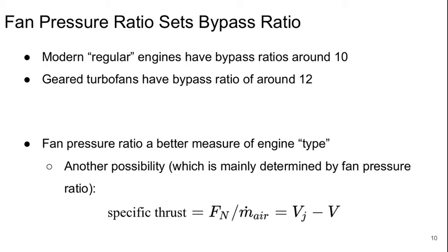So most modern regular engines have bypass ratios of around 10-ish. The geared turbofan engines have higher bypass ratios of up to 12. This fan pressure ratio is really a better measure of what type of engine it is than the exact value of the bypass ratio. Or another way to think about it in terms of classifying what kind of engine it is is to think about it in terms of specific thrust. Specific thrust is just the net thrust over the mass flow rate of air, so it's the jet velocity minus the flight speed.